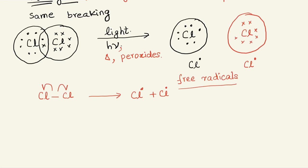Homolytic bond fission reactions are usually very fast — it's like they just part ways: you go your way, I go mine. Reactions which involve the formation of free radicals are usually fast, compared to reactions involving heterolytic bond fission.